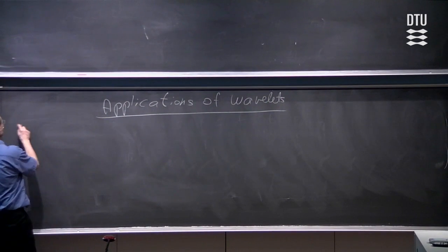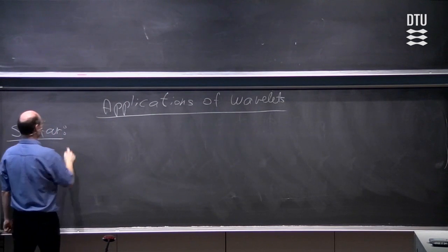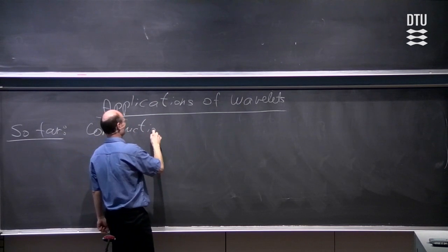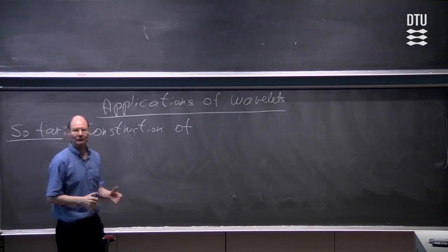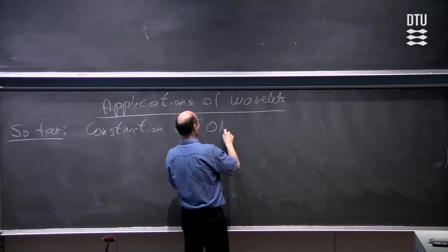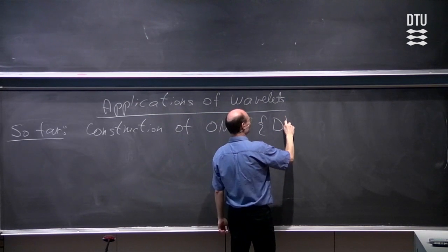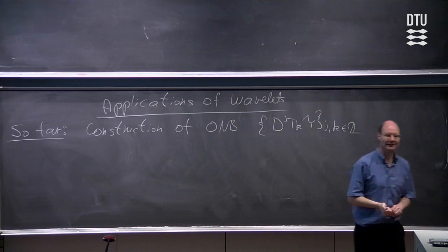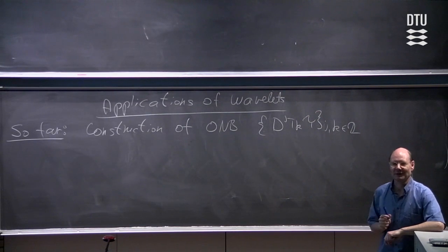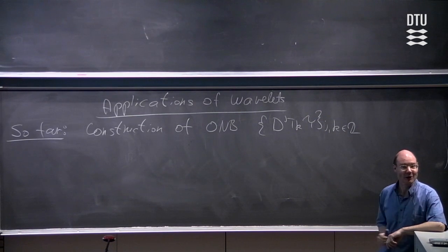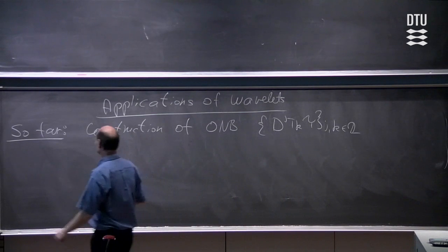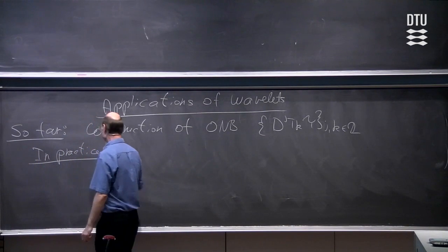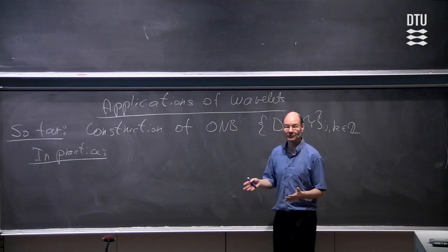So what do we know so far? We know now how to construct a wavelet, and we know how to construct an orthonormal basis. The orthonormal basis is D^j T_k ψ. The interesting thing is, we worked very hard to construct that orthonormal basis, but in applications we are not really dealing with this orthonormal basis — we are dealing with another orthonormal basis.